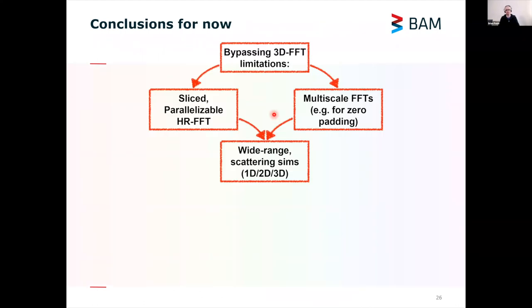So for now, the conclusions are that yes, we can actually bypass the traditional 3D Fourier transform limitations with two pathways, ideally applied simultaneously. You can parallelize your Fourier transform by slicing it up, and you can do multi-scale Fourier transforms and merge them later on to get a little bit better behavior in low Q. And then you have your wide range scattering pattern. I just want to mention that this doesn't have to be a one-dimensional curve. Depending on how you slice or how you average your final result, you can also get it in two dimensions or three dimensions.